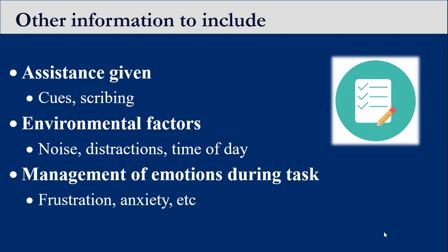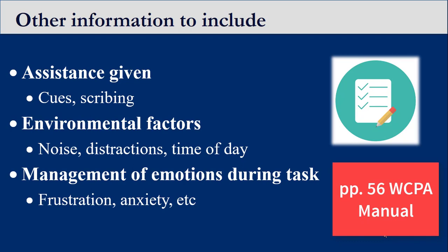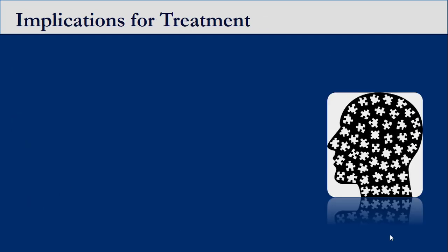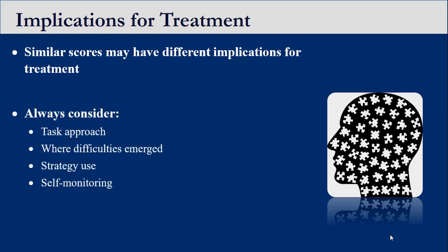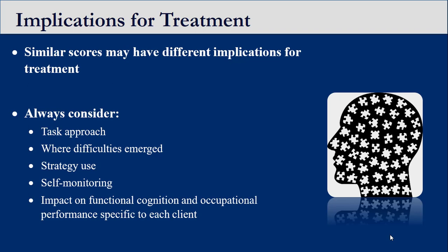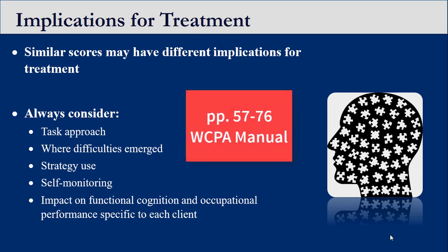You might also consider emotional stability or instability — how does the client manage emotions during the task? Page 56 of the WCPA manual provides more information on this topic. Clients may have similar scores, but implications for treatment could be very different. Always consider how the client approached the task, where difficulties emerged, effectiveness of strategies used, and their ability to self-monitor performance to guide treatment approaches. It is important to understand how difficulties with functional cognition impact occupational performance. Pages 57 to 76 of the WCPA manual provide examples of performance analysis and interpretation.